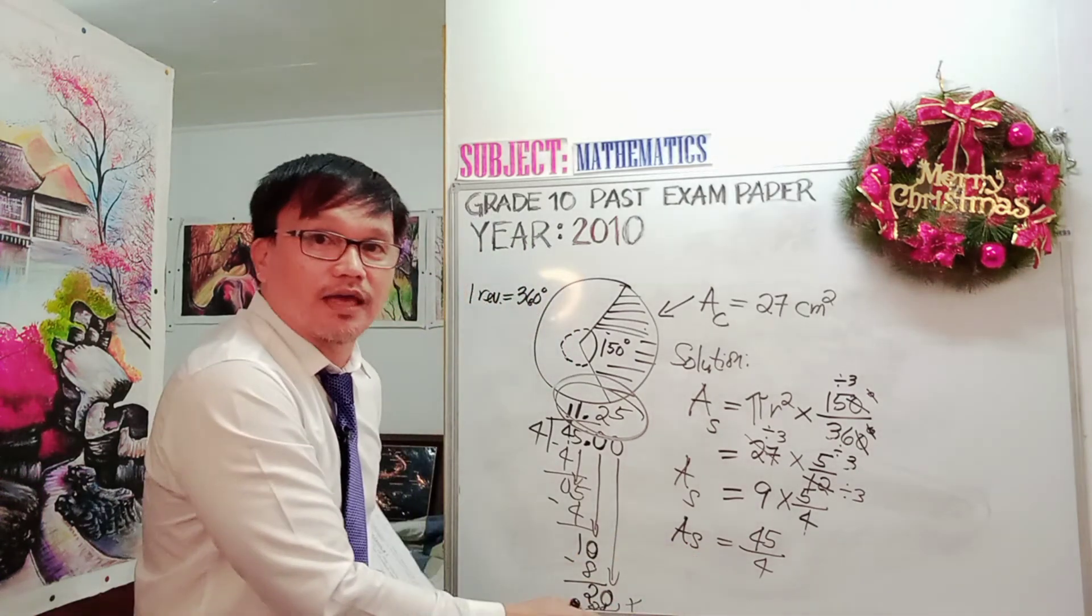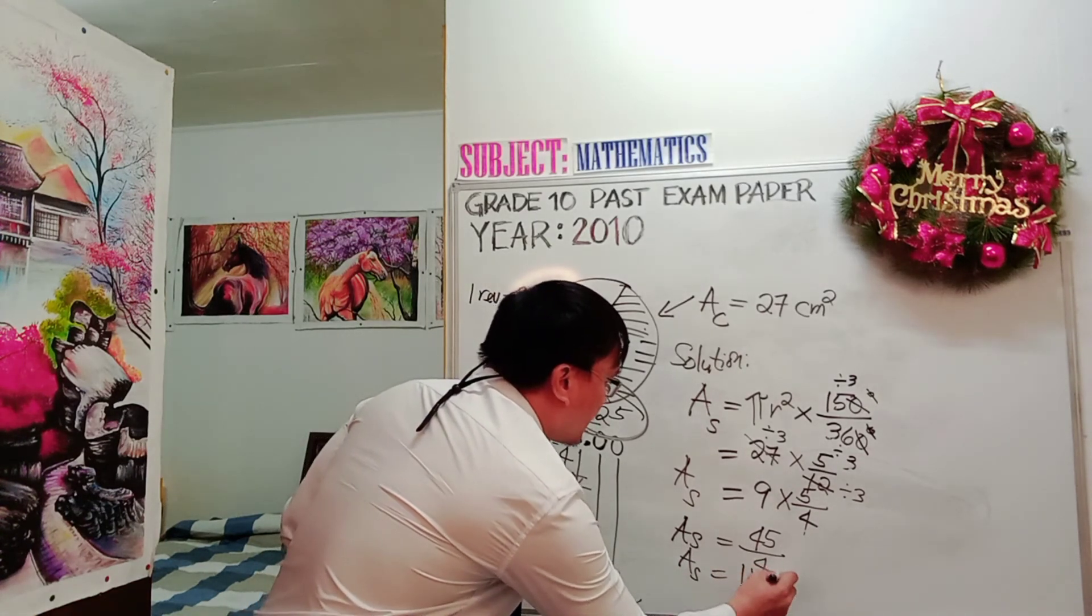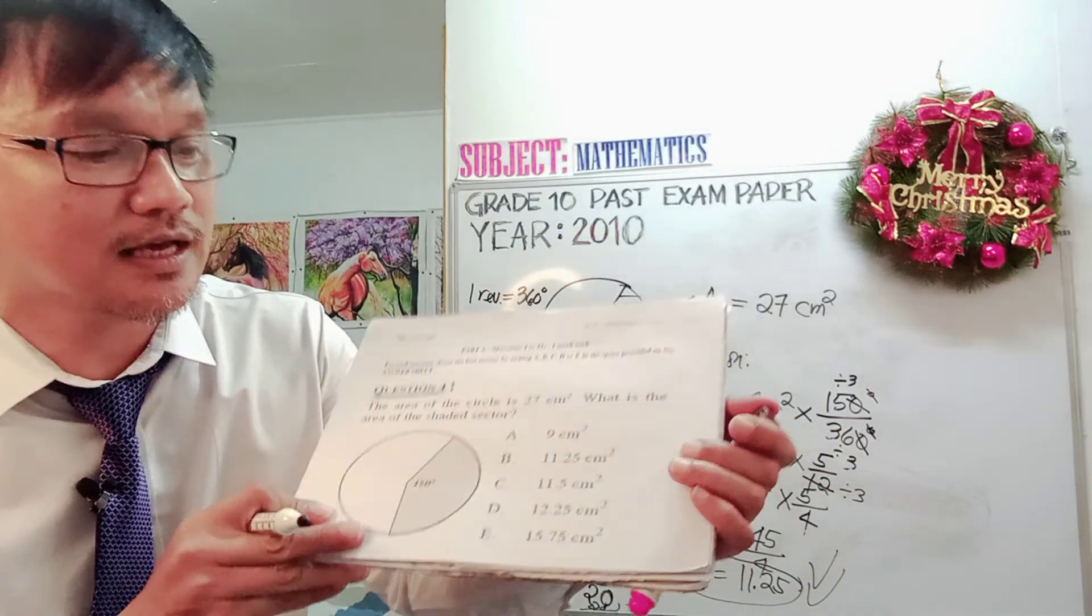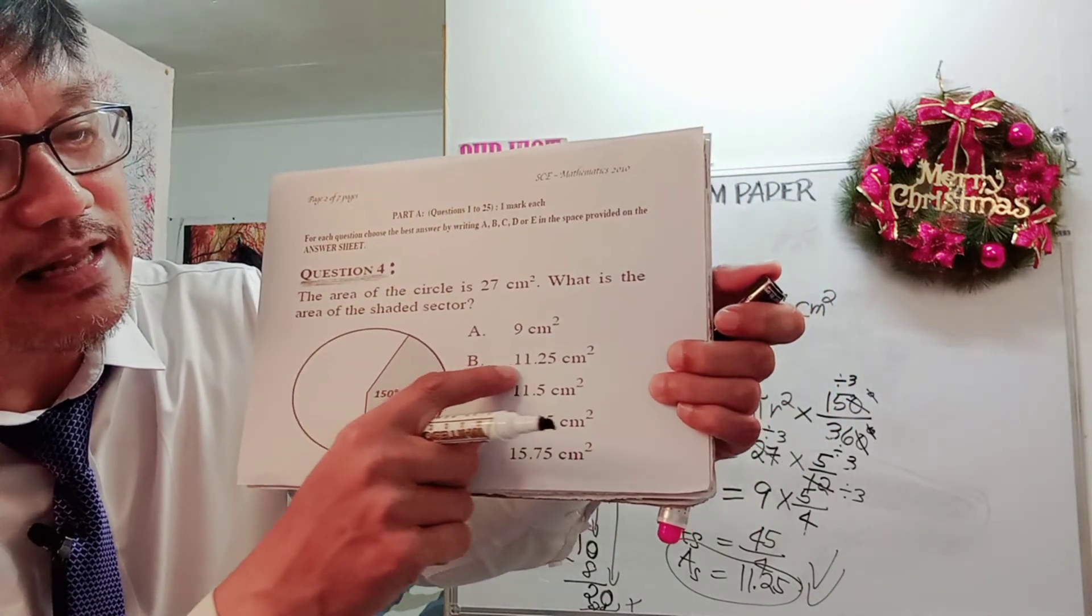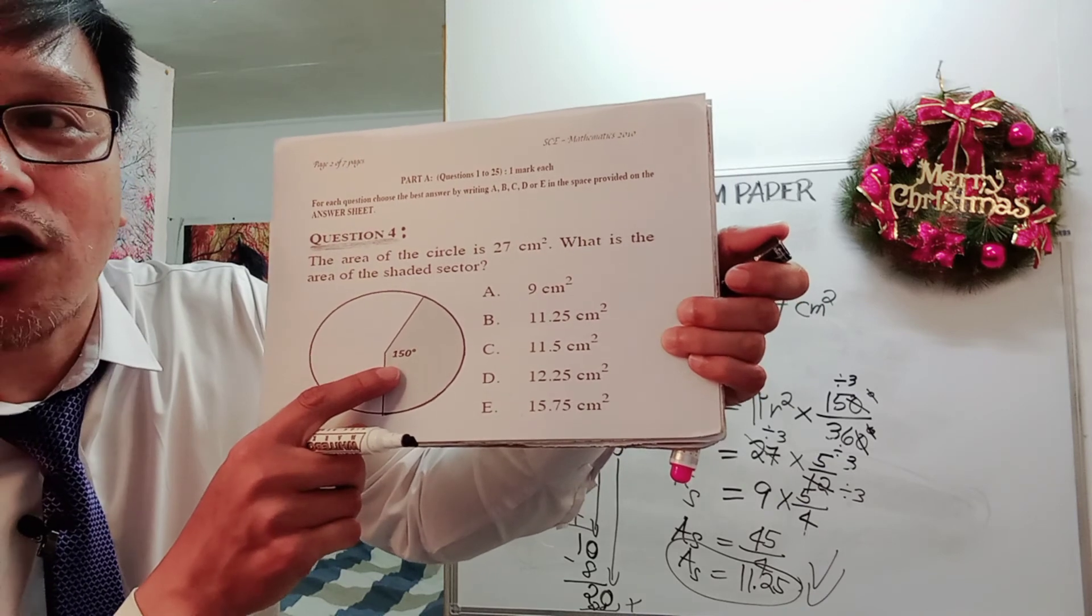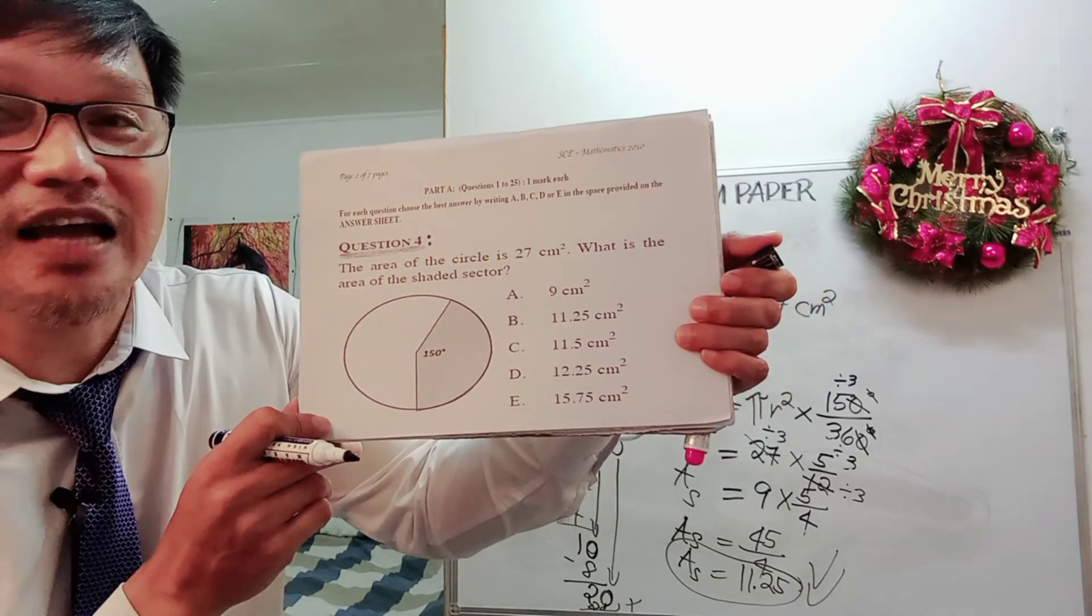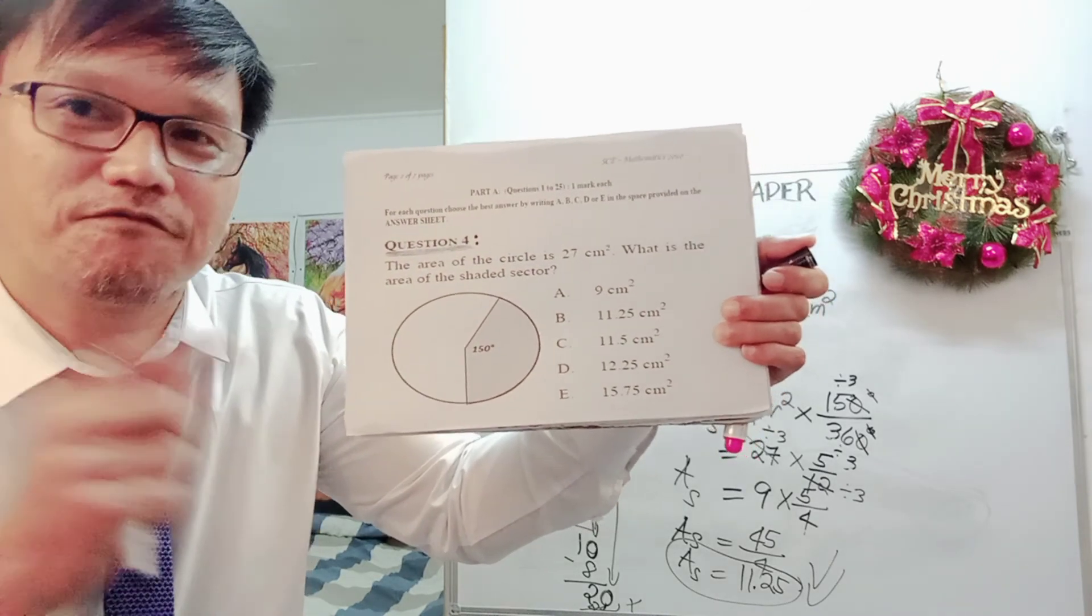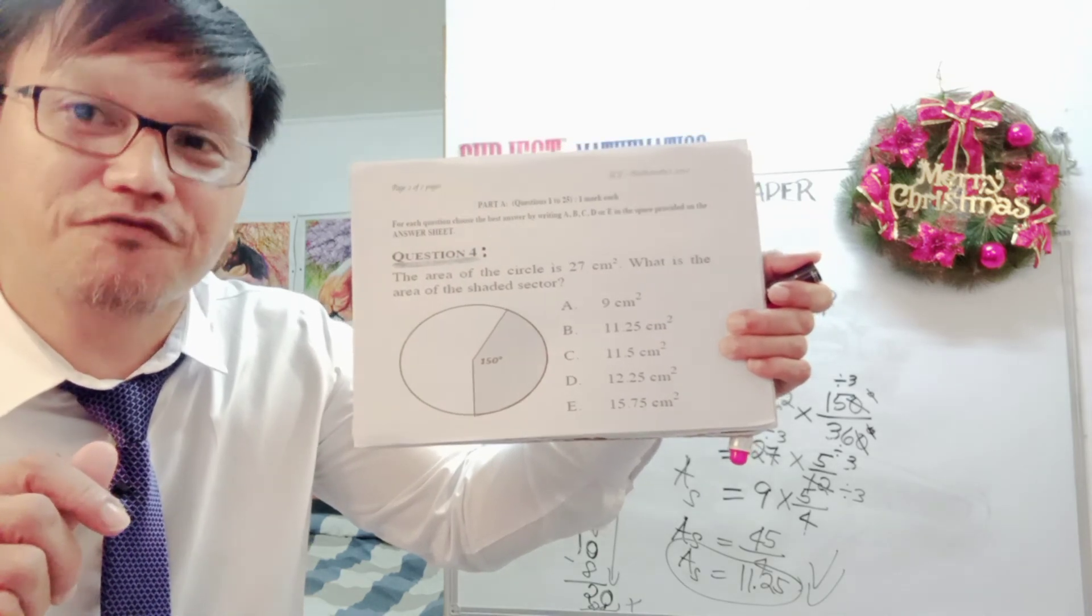So your final answer now is the area of the sector is equal to 11.25 and therefore, the correct answer for this question is letter B, 11.25, the answer to the question and finding the area of the shaded sector in this given diagram. This is question number 3 and this is video number 2. Watch for this one and find out and learn from this. So see you in video number 3 for question number 4. Bye-bye.